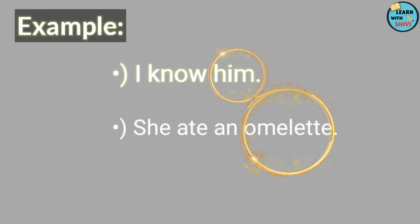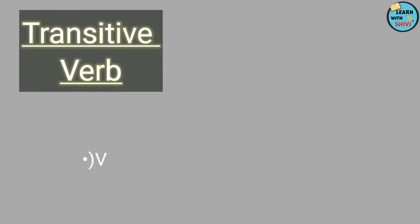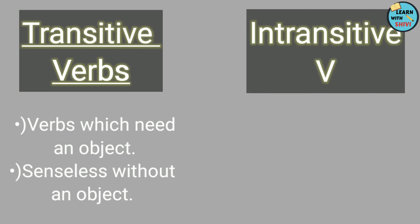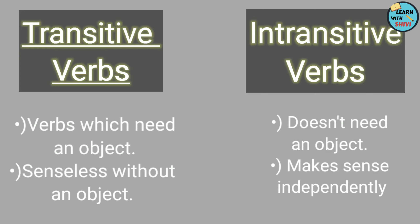So without further ado, let's move ahead and understand what are transitive verbs and intransitive verbs. Transitive verbs refer to those verbs which cannot complete the sentence on their own — they demand an object to make a meaningful sentence. Whereas intransitive verbs refer to those verbs that do not require an object to act upon; they are self-sufficient and can make meaningful sentences on their own.